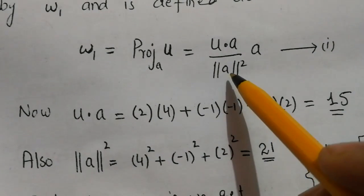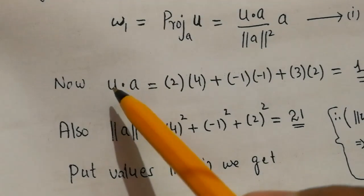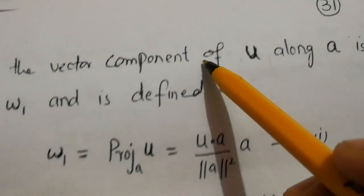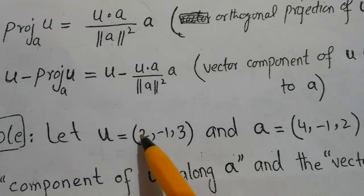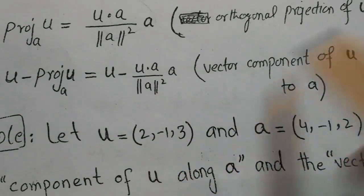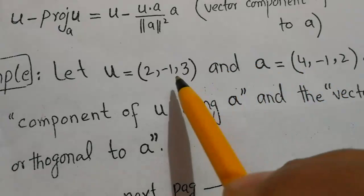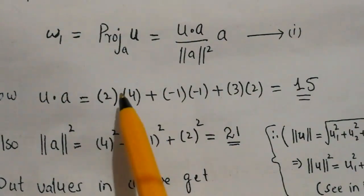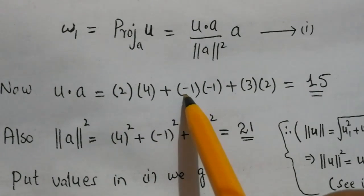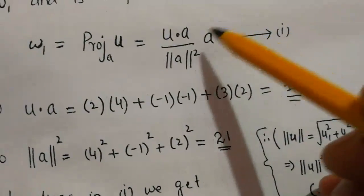I have already made a lecture explaining how to calculate the norm of a vector, so if you are not familiar with that concept you should watch the corresponding video. For our particular vectors, u · a is calculated by multiplying corresponding elements and adding them: 2×4 + (-1)×(-1) + 3×2, which gives u · a = 15.